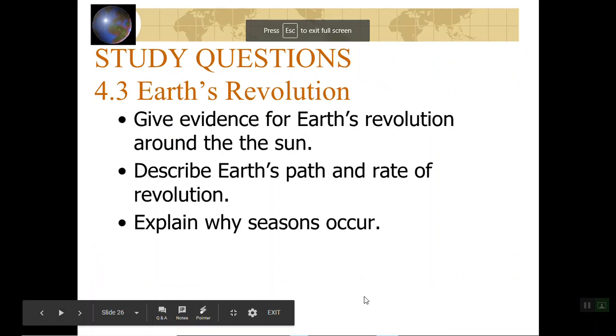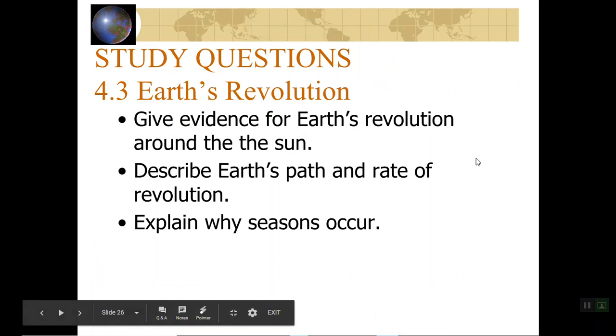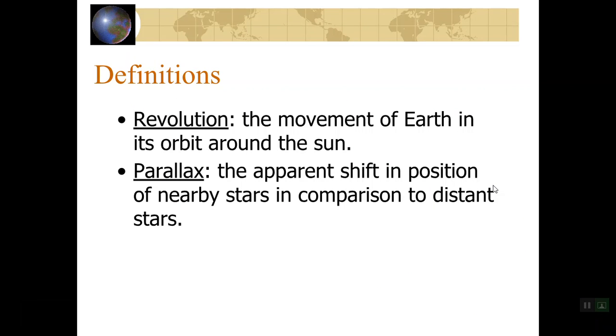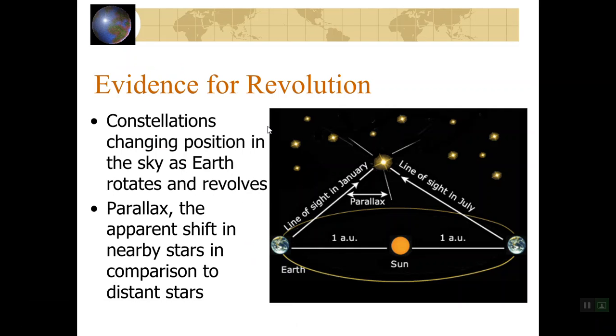Alright, so here we are on Earth's revolution. We're going to talk about evidence of Earth's revolution and describe Earth's path and rate of revolution, as well as explain why we have seasons. So revolution is like almost the same as when people say orbit around the sun or revolution around the sun. When we talk about Earth, it's going around the sun. But if we talk about the moon, the moon's going around Earth. So revolution is when it goes around another body. What is our evidence that Earth is even revolving around the sun at all? Well, the constellations change position in the sky throughout the year. Also, there's something called parallax, which is the apparent shift in nearby stars in comparison to distant stars. Those are two big pieces of evidence for Earth's revolution.